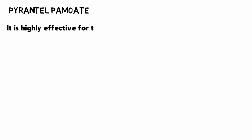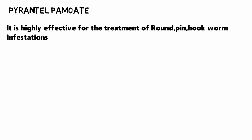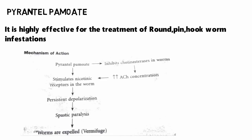The adverse drug reactions of ivermectin include nausea, vomiting, diarrhea, itching, and skin rashes, which are common to most anti-helminthic drugs. Another drug is pyrantel pamoate. It is highly effective for the treatment of roundworm, pinworm, and hookworm infestations. The mechanism of action is that pyrantel pamoate inhibits acetylcholinesterase, which results in increased acetylcholine concentration, stimulating nicotinic receptors in worms, resulting in persistent depolarization and spastic paralysis, and the worms are expelled — producing a vermifuge action.